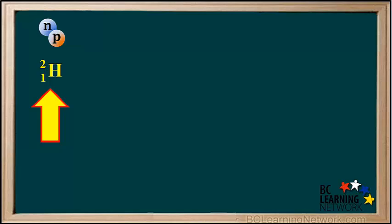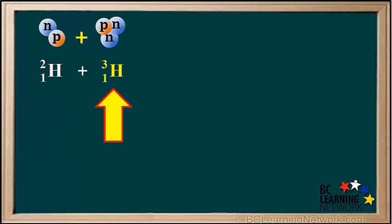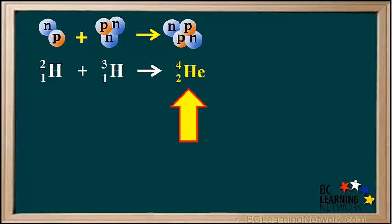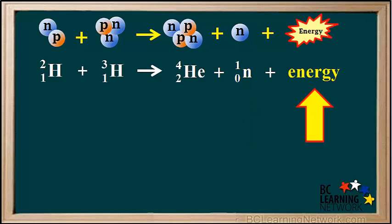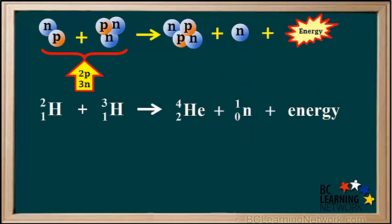A hydrogen 2, or deuterium nucleus, collides with a hydrogen 3, or tritium nucleus, and they fuse together to form a helium 4 nucleus. And in the process, a neutron is released, as well as energy. Notice we have a total of two protons and three neutrons in the reactants. And also a total of two protons and three neutrons in the products. So protons and neutrons are conserved.